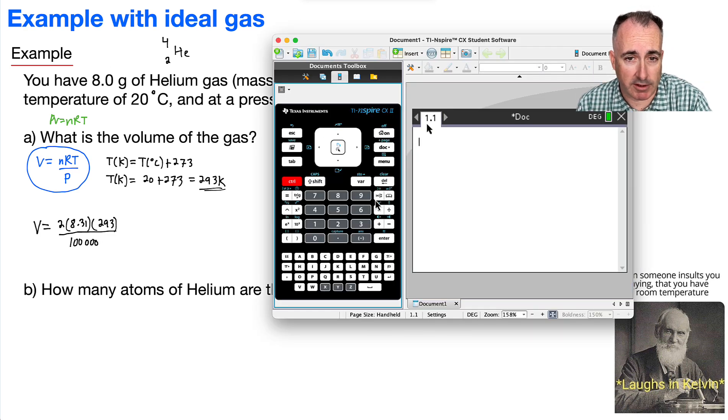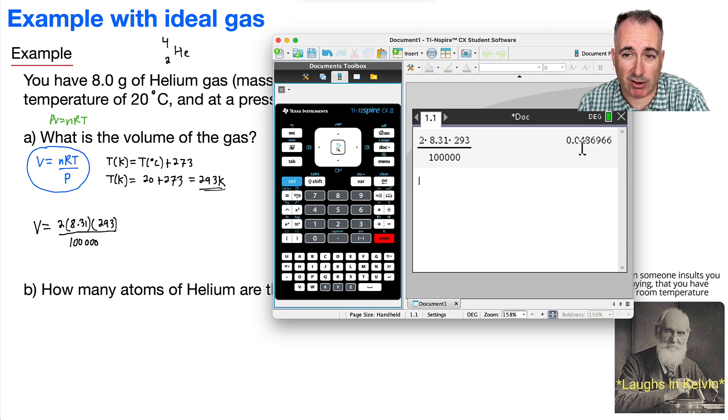So I'm just going to do a fraction, and I'll say 2 times 8.31, that's the gas constant, times 293 Kelvin, divide that by 100,000. Whoops, that's too many zeros, isn't it? Yeah. And there we go. So I have a number of 0.0486966.